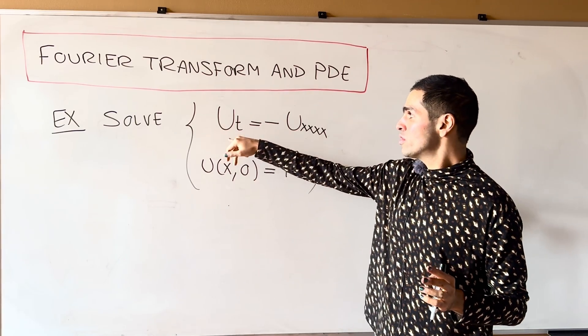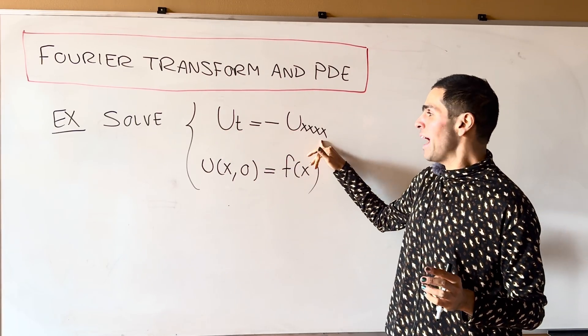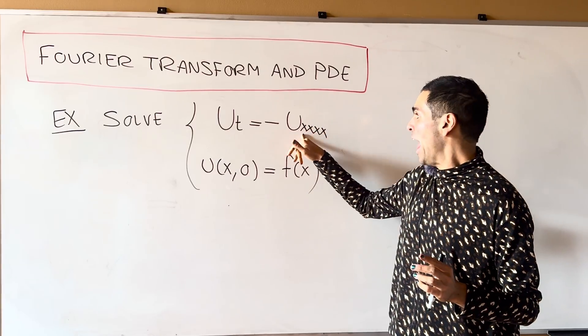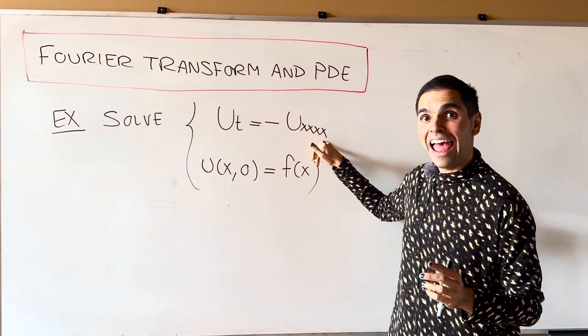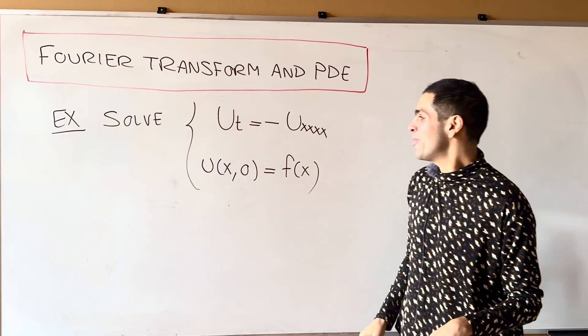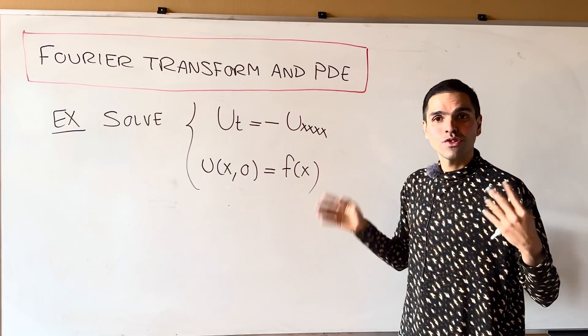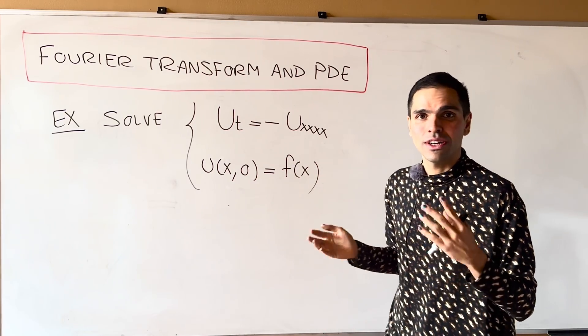To illustrate, let's try to solve UT equals minus UXXXX, so quadruple X with some initial condition U of X0 equals F of X.